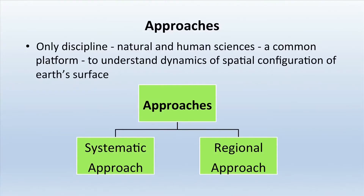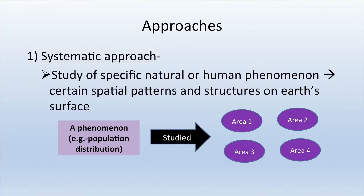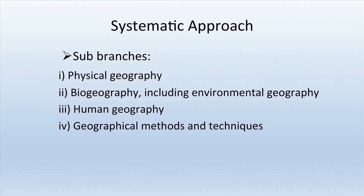Geography is the only discipline where natural and human sciences come on a common platform to understand the dynamics of spatial configuration of the earth's surface. There are two main approaches: systematic and regional. In the systematic approach, one aspect is studied across all places — for example, studying population worldwide. It is the study of specific natural or human phenomena with spatial patterns and structures. Sub-branches include physical geography, biogeography, environmental geography, human geography, and geographical methods and techniques.